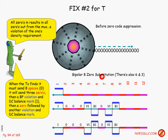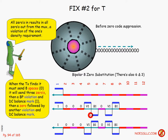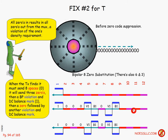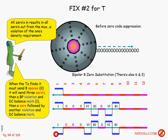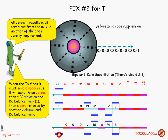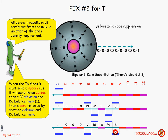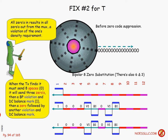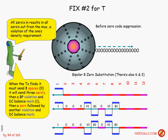This is Bipolar 8 Zero Substitution — B8ZS. I've seen it listed as both substitution and suppression. There are also 6-zero and 3-zero variants, but this one's the easiest to see. Long string of zeros: send zero, zero, zero, violation, balance, zero, violation, balance, and repeat. When the original true mark was in the negative position, the pattern is effectively turned over — violation, balance, real zero, violation, balance. B8ZS gets around the problem of restricting customer input bit streams, allowing the full 64 kilobits per channel.